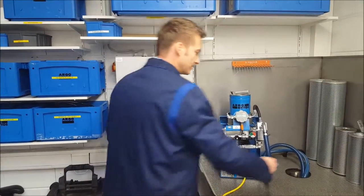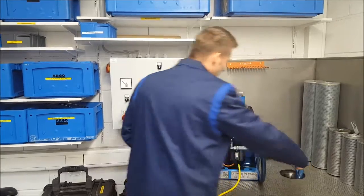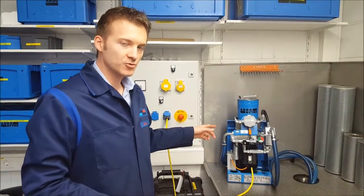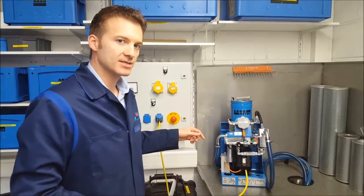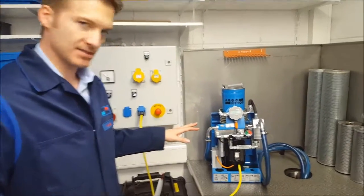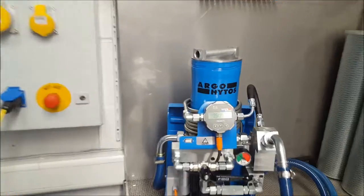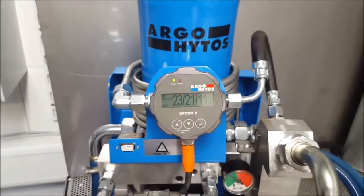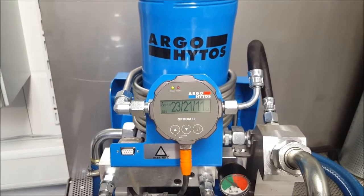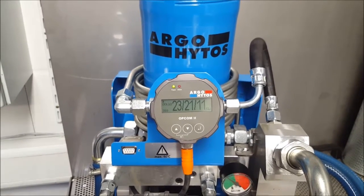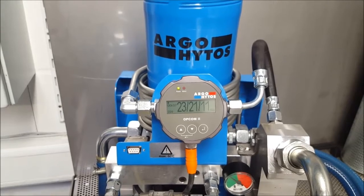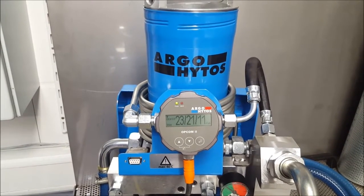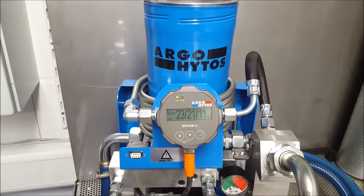Now that the unit is running, we can directly see that the particle measurement will show after one measurement cycle what the current cleanliness level is. This process is going to steady itself after a few measurements. The measurement time itself can be set according to your liking. The cleaner the system is, the higher the measurement time should be.